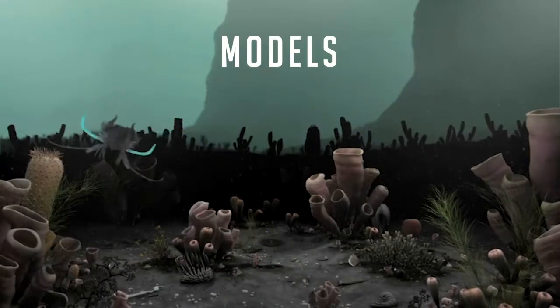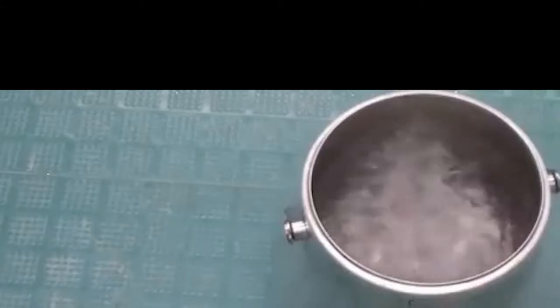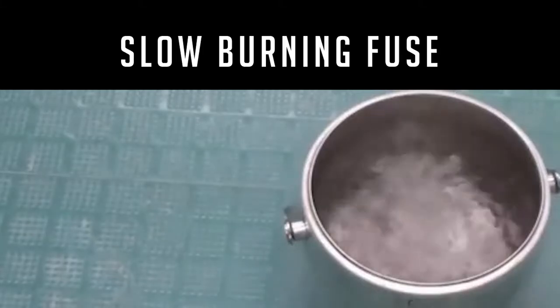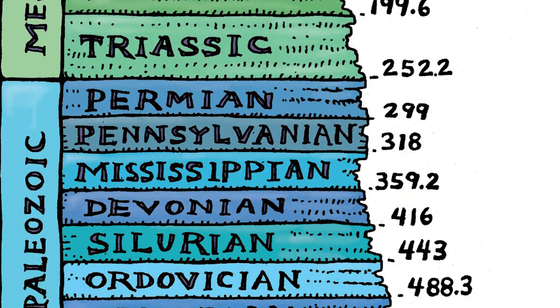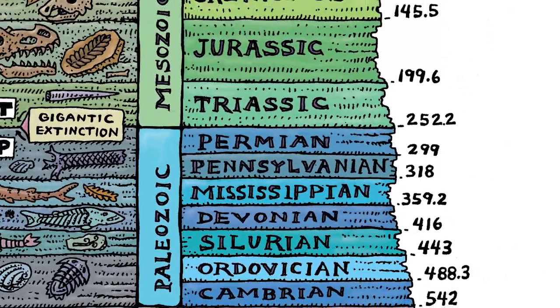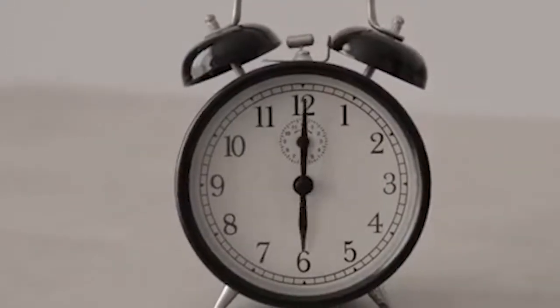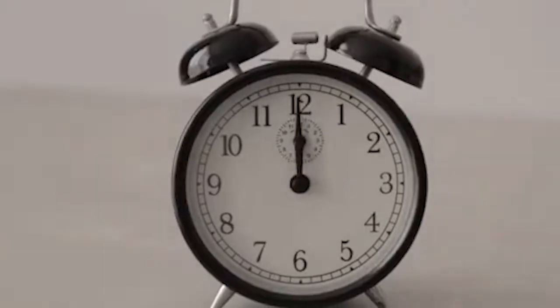These are some of the proposed models about what happened during the Cambrian. The first model is the slow burning fuse model. This model says that the fossil pattern suggests that the major diversification of animals started at the beginning of the Cambrian period. However, many scientists think that some primitive animals existed a long way before into the Precambrian. Evidence for this is controversial and comes from genetic data from molecular clocks.